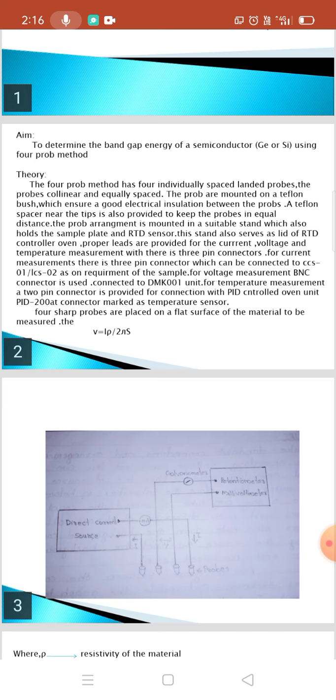The probes are mounted on Teflon bushes which ensure good electrical insulation between the probes. A Teflon spacer near the tip is also provided to keep the probes at equal distance. The probe arrangement is mounted in a suitable stand which also holds the sample plate and RTD sensor. This stand also serves as the lid of the RTD controller oven. Probe leads are provided for the current voltage and temperature measurement with three-pin connectors. For current measurement there is a three-pin connector which can be connected to CCS01 or ICS02 as a requirement of the sample. For voltage measurement, a BNC two-pin connector is provided for connection with PID controller of unit PID 200 at connector marked as temperature sensor.